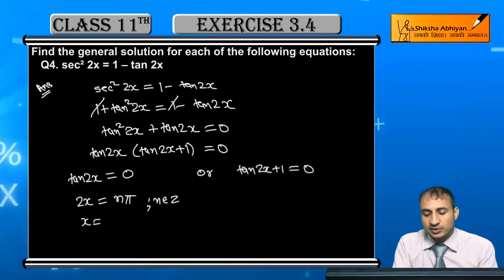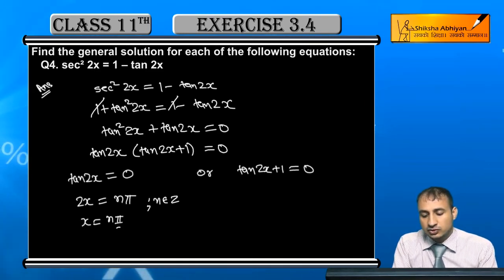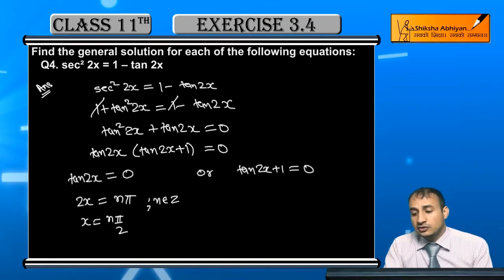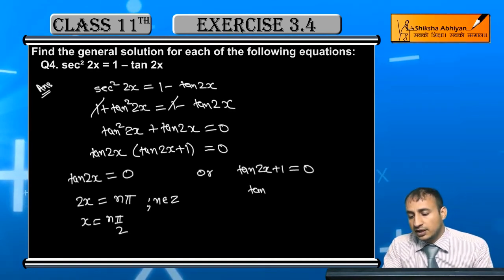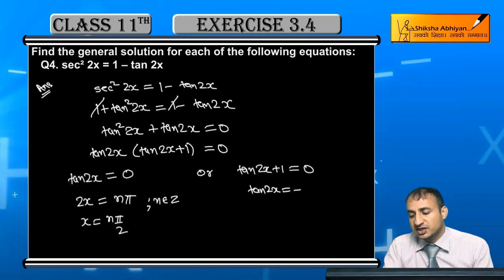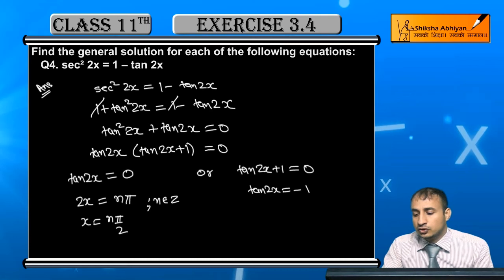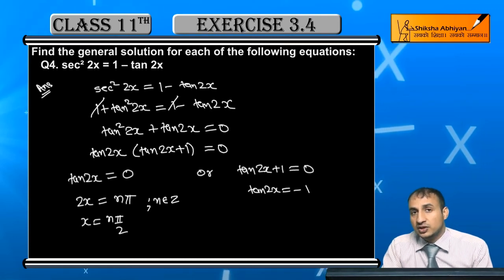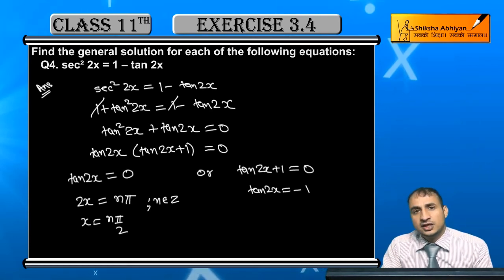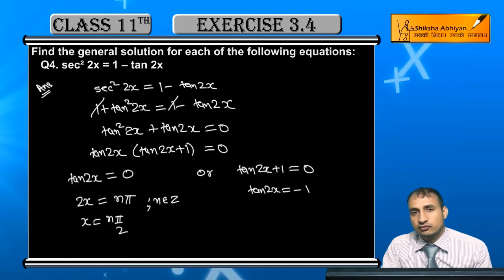So x = nπ/2, where n is an integer. For the second case, tan2x = -1. When will tan2x equal -1?